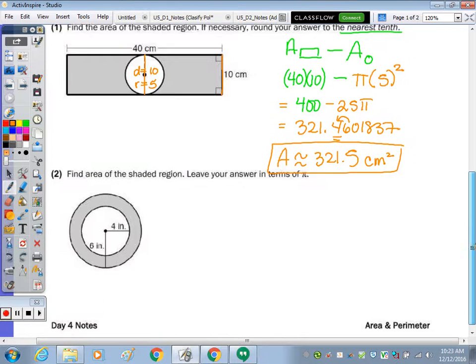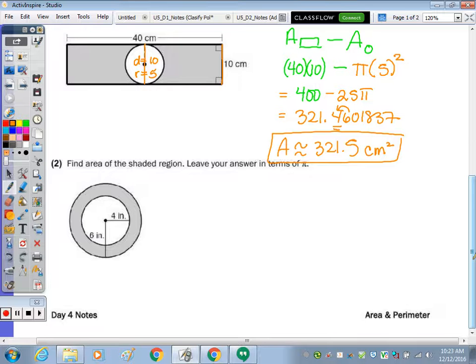Two. Find the area of the shaded region. This time leave your answer in terms of pi. We have two circles. So that's pretty easy. It makes sense if they're both circles.